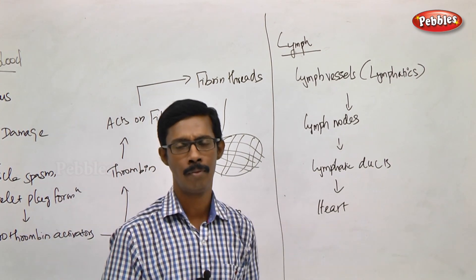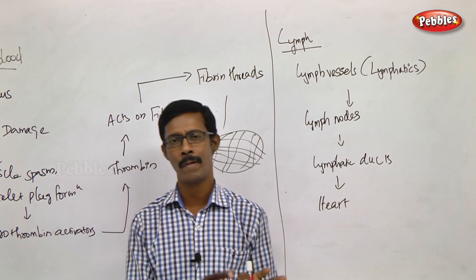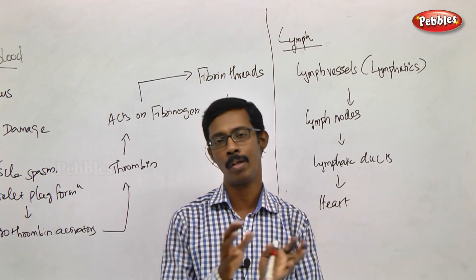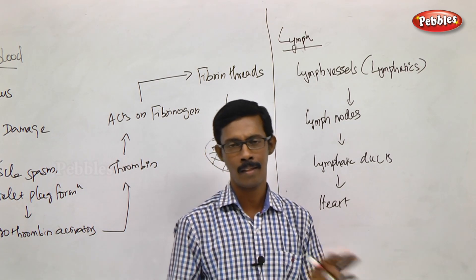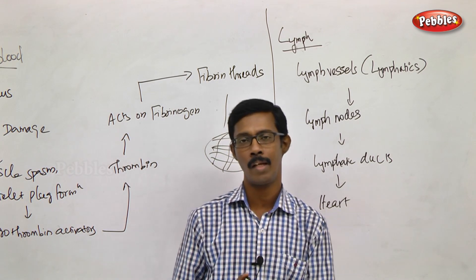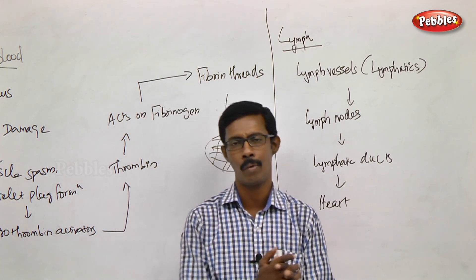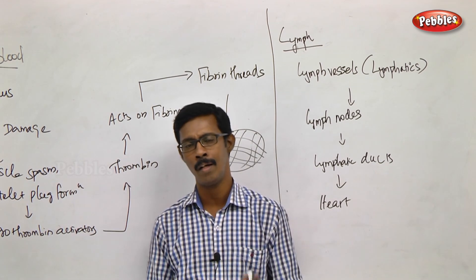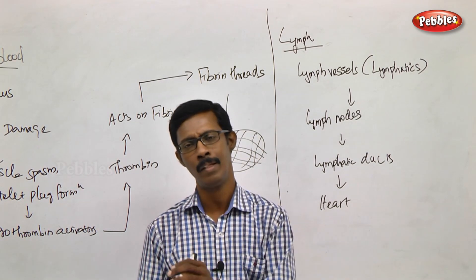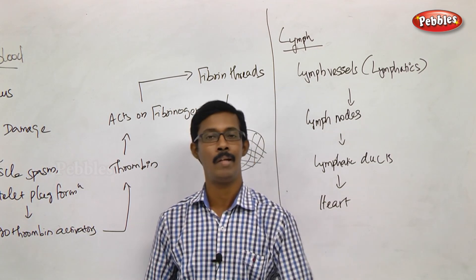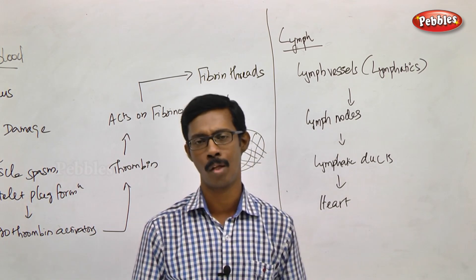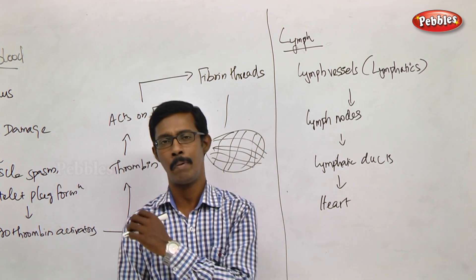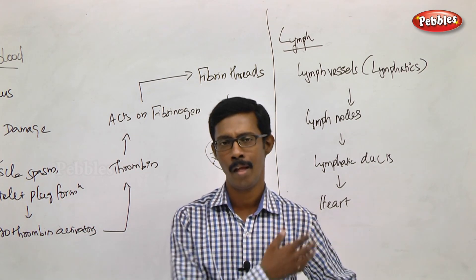Now let us talk about lymph and its components. Blood is under high pressure in blood vessels. Because of this pressure, the liquid portion of blood — plasma — along with small proteins, leaks out through vessel walls. This leaked fluid is lymph.